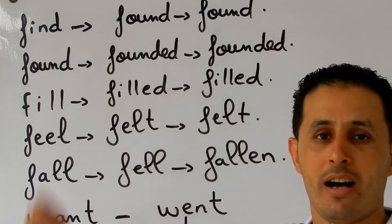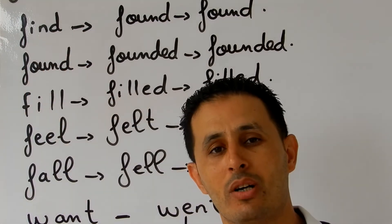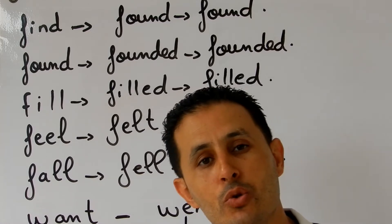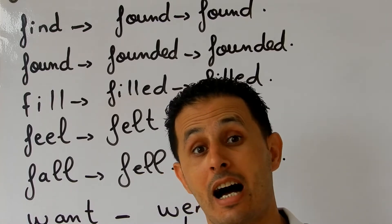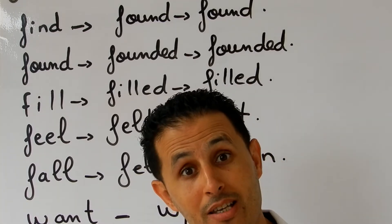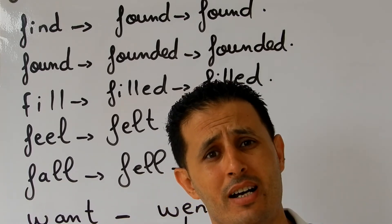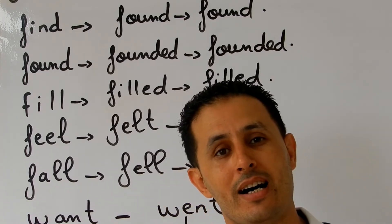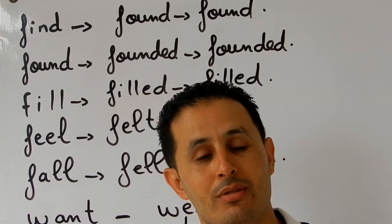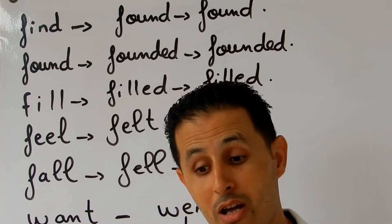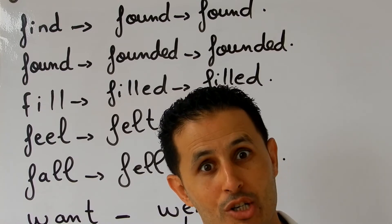Verb number one is 'find.' When you want to find something, you need to look for it. Example: I kept looking for my dictionary and finally I found it. So 'find' is an irregular verb — the simple past of 'find' is 'found,' and the past participle is also 'found': find, found, found. When you find something, you get it after some search.